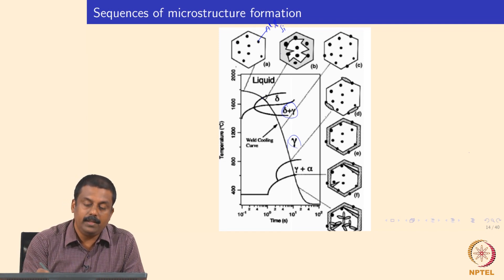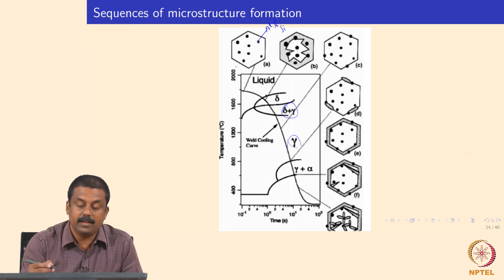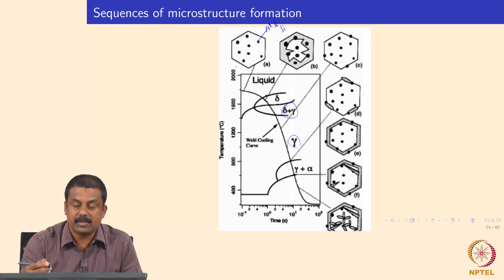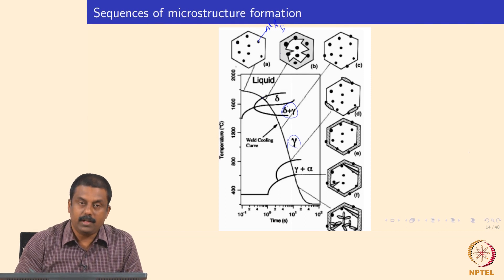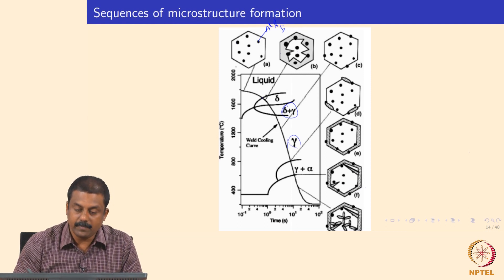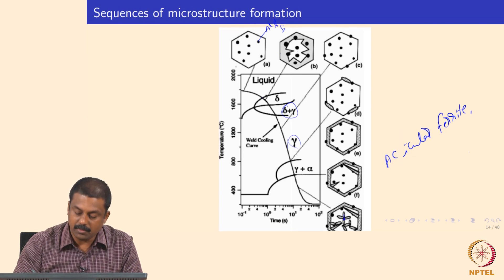In this reaction, the first rate-controlling step for subsequent microstructure evolution is inclusion formation. Inclusions can be engineered to our favor. For example, if you have size-controlled inclusions, they also act as potential nucleation sites for the subsequent phase transformation from austenite to room temperature. Acicular ferrite is known to nucleate on non-metallic inclusions present in the microstructure.